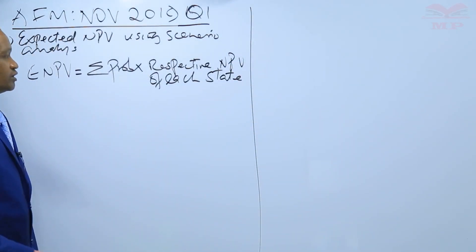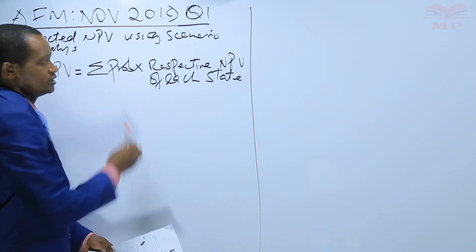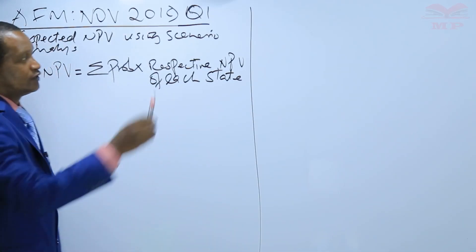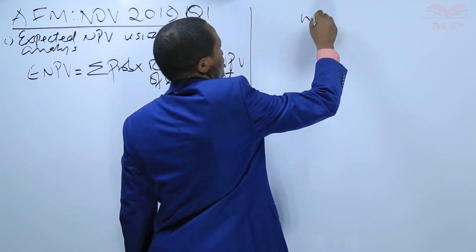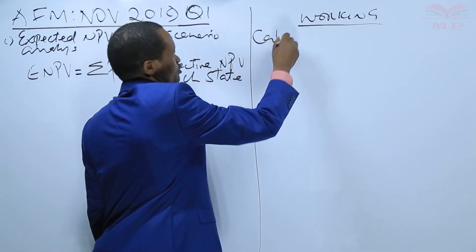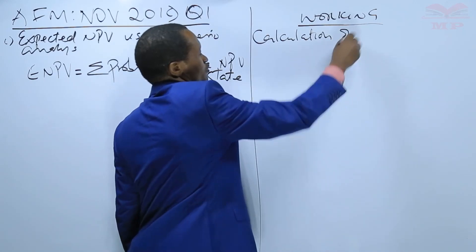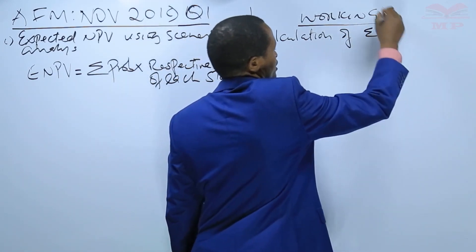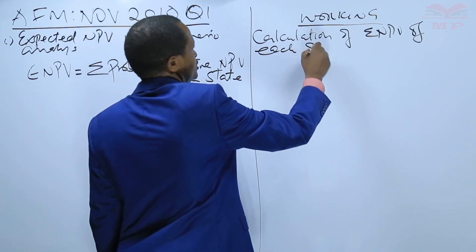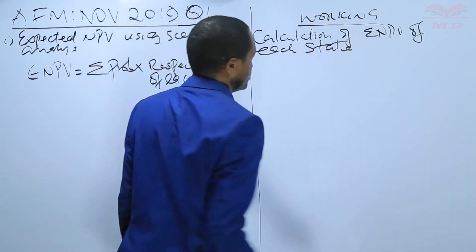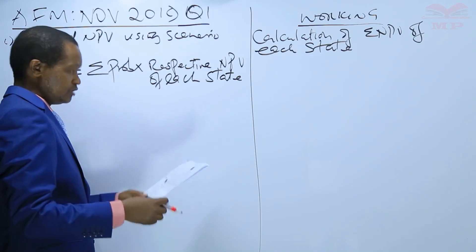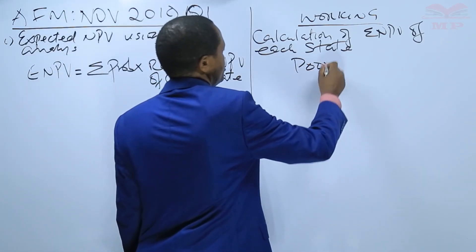Reading from the question, we only have the probabilities, so what we do is compute the respective NPVs of each state. We show the working calculation here. There are three states: poor, normal, and good. We begin with the poor state.